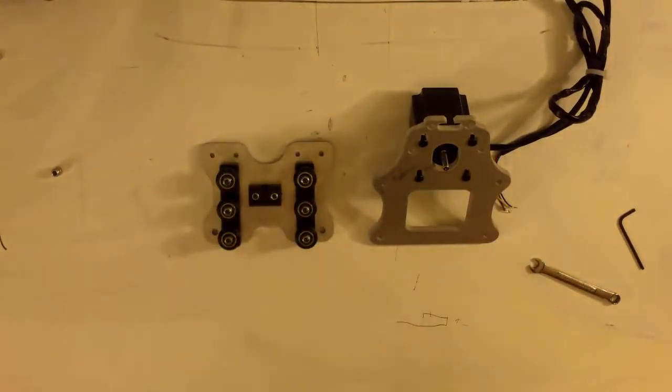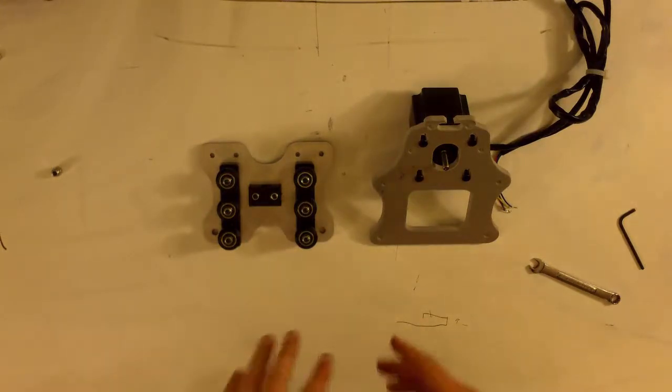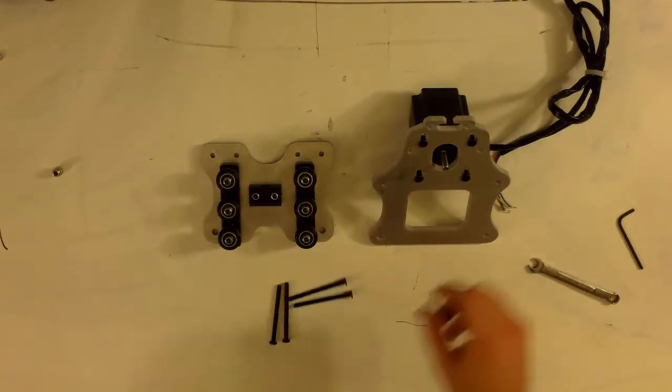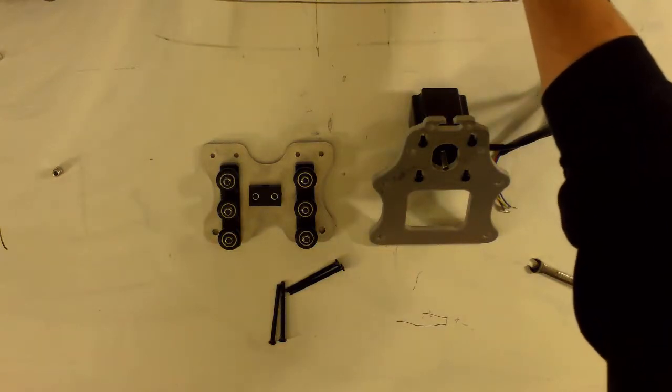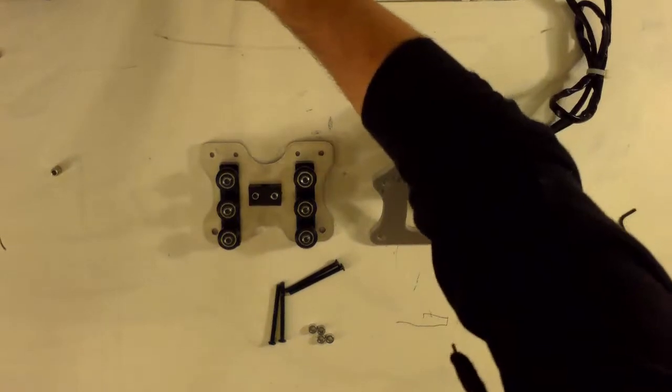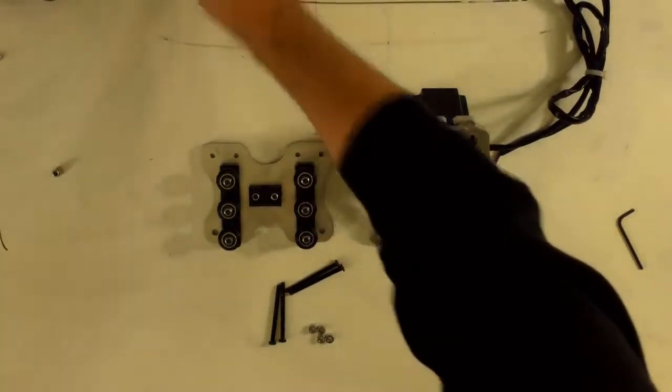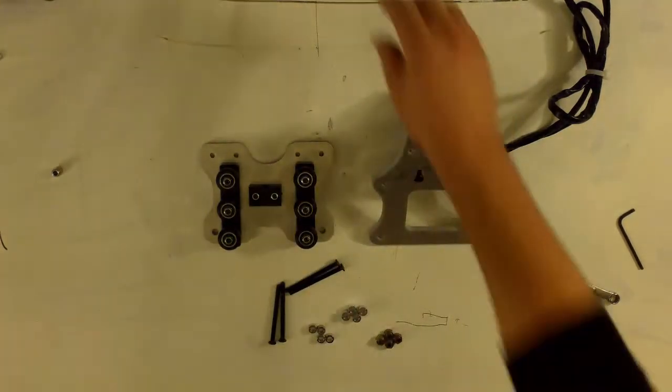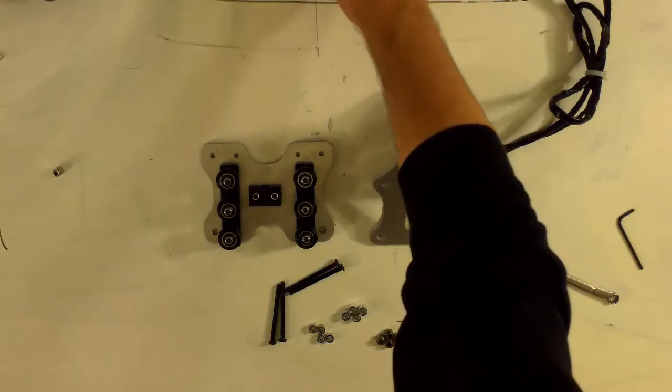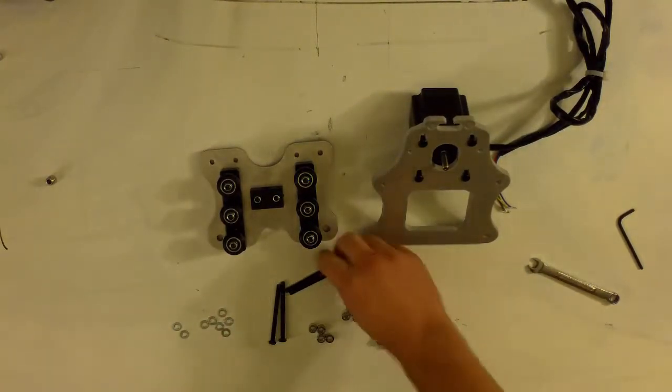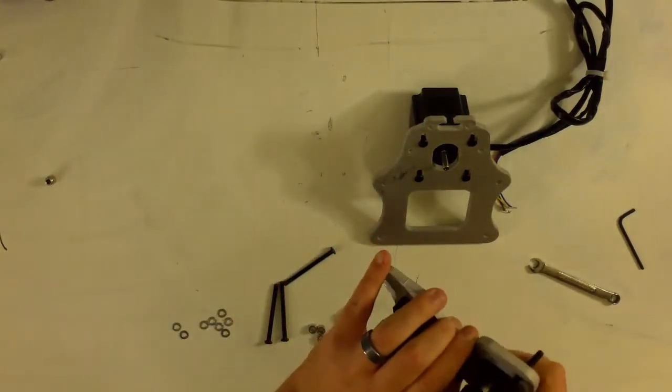So now that we have the front and back x gantry plate ready to go, we're now going to start assembling these together. And for that you will need quite a few pieces. You've got the four M5 x 65 bolts. You will need the four quarter inch spacers that come with your wheel kits. You will need the four nine millimeter spacers. So these will actually go between the two wheels. So this will be the very center spacer. You'll need four eccentric spacers. And you will also need eight of the precision shims.